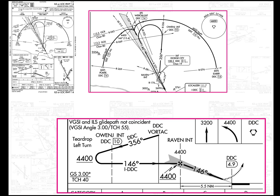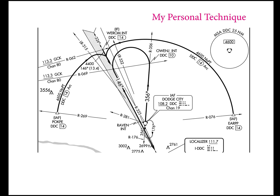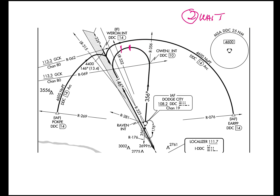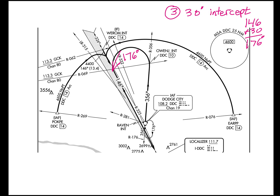Here's my personal technique — it is not authoritative, it's just what I do. Focusing on the plan view, I break it into three steps. Step one: turn 90 degrees relative to the final approach course of 236 degrees — that's 90 degrees relative to the inbound. Step two: wait a little bit, using judgment — if going into a headwind, wait longer; with a tailwind, don't wait as long. Step three: pick up a 30-degree intercept to the final — in this case, 176 degrees — and finish it up. That gives plenty of time to intercept.